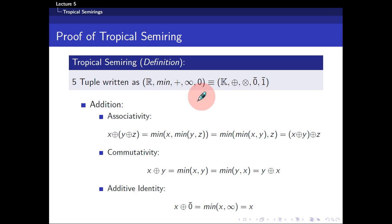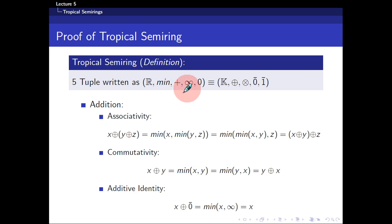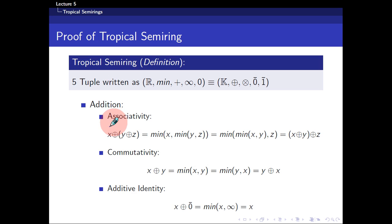Now, how do I show you something is a semi-ring? Well, we just need to go through and prove that the operators — the plus and times operators — follow their own properties. For the addition operator, I need to show it is associative, commutative, and has an additive identity.